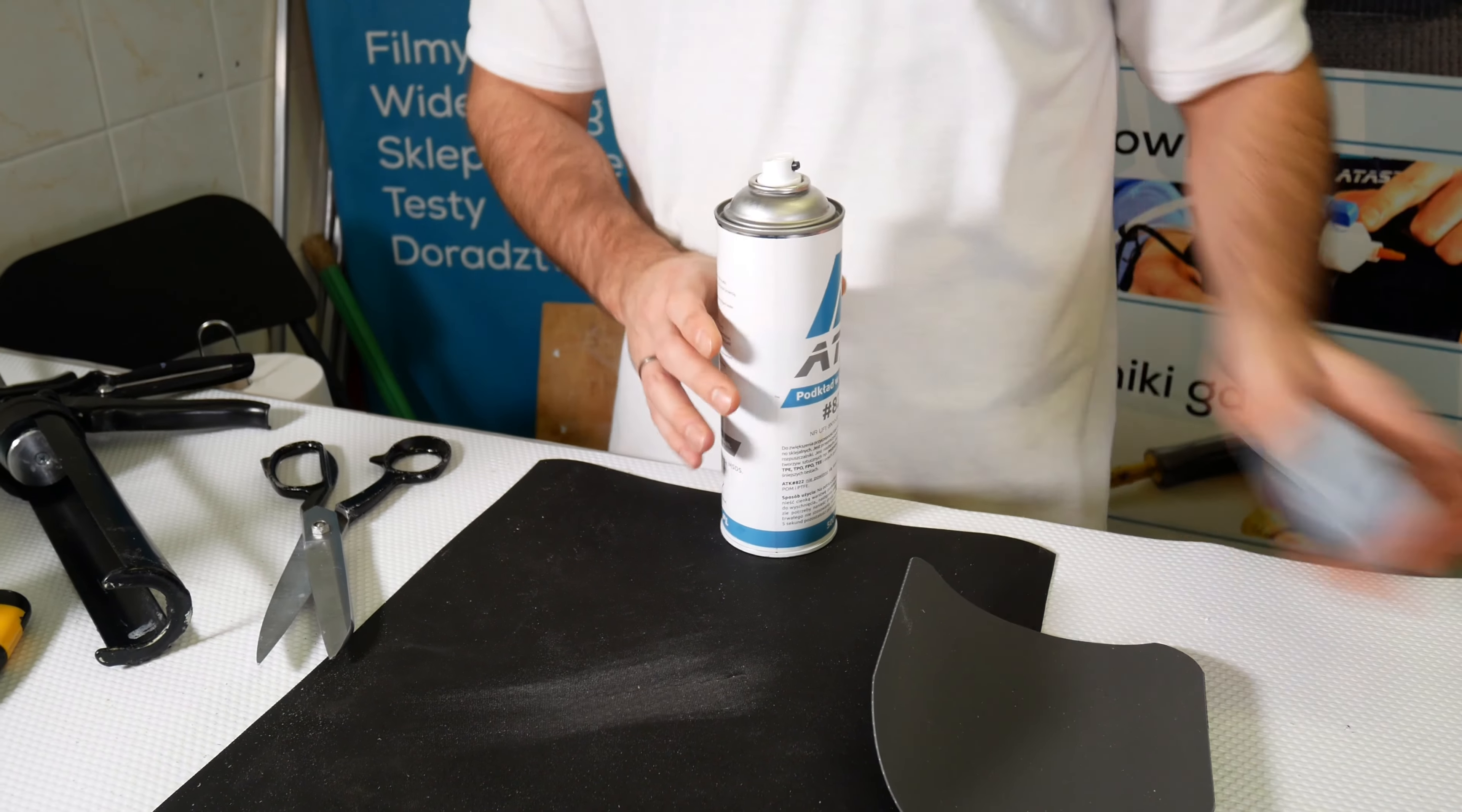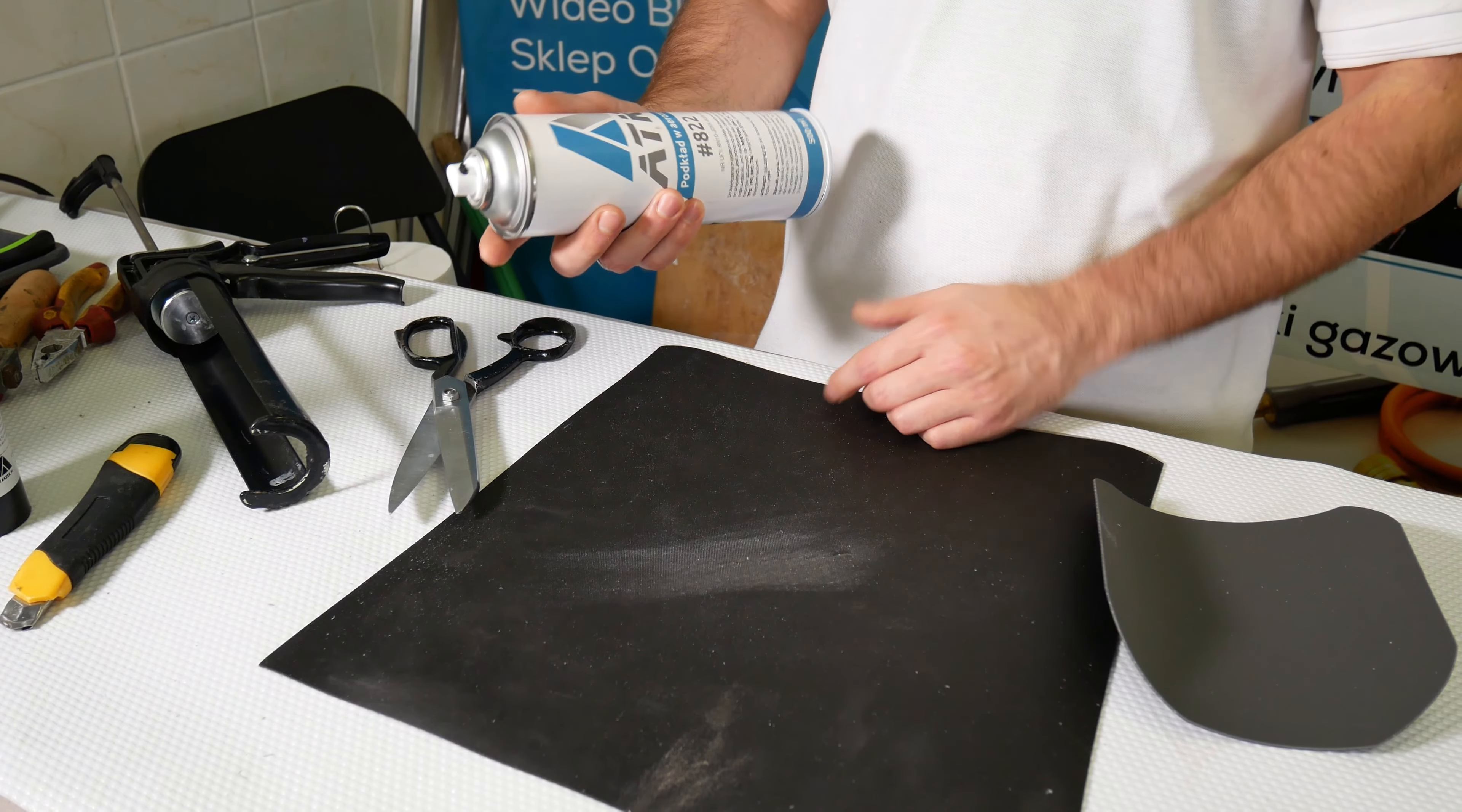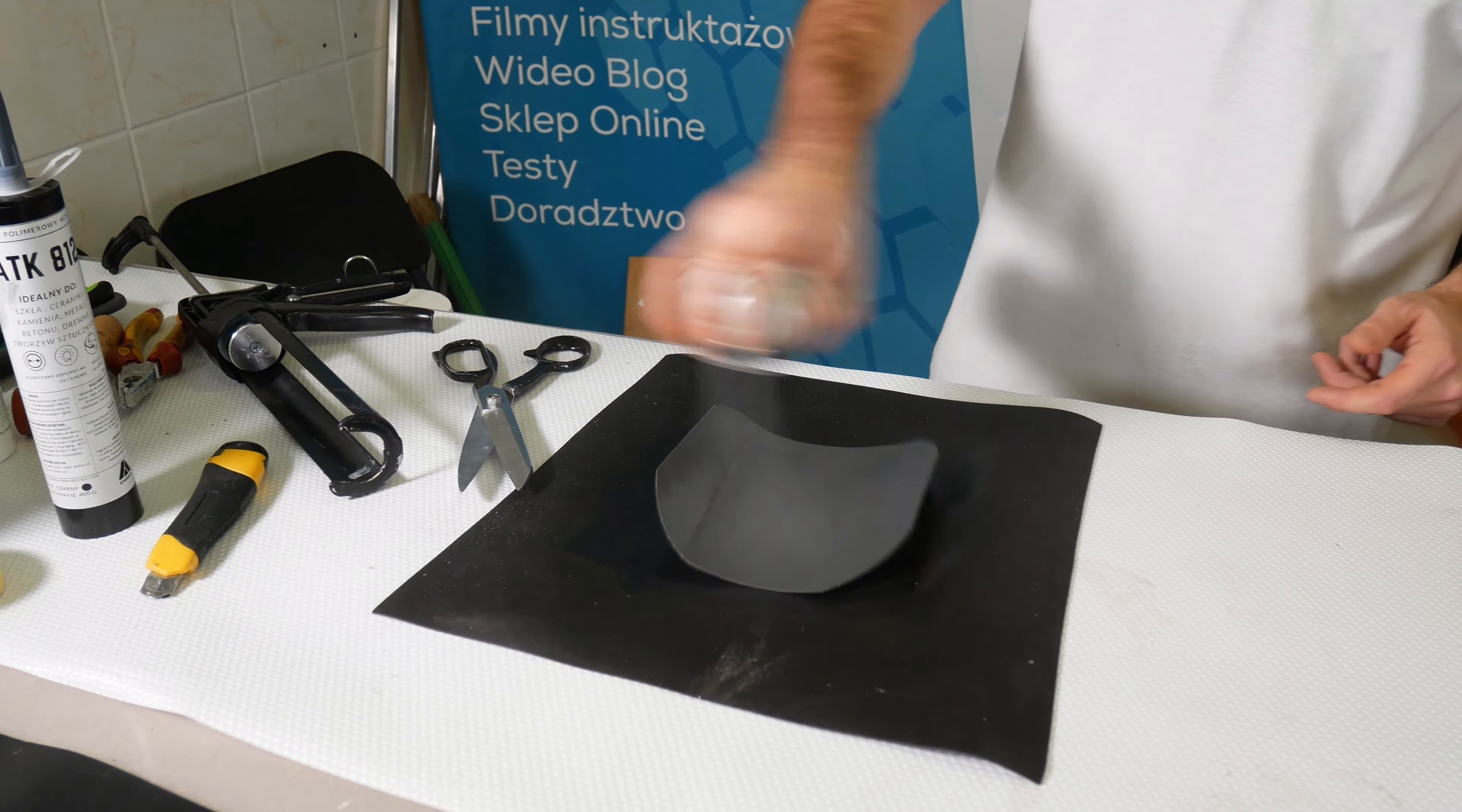The exceptions are adhesives which are on butyl, however they are not as strong. You could also do it with hill coal available from us, but it is still not as strong as ATK 812 glue. We have to spray primer 822. This repair in water we cannot do. There must be a dry element because the primer must evaporate.